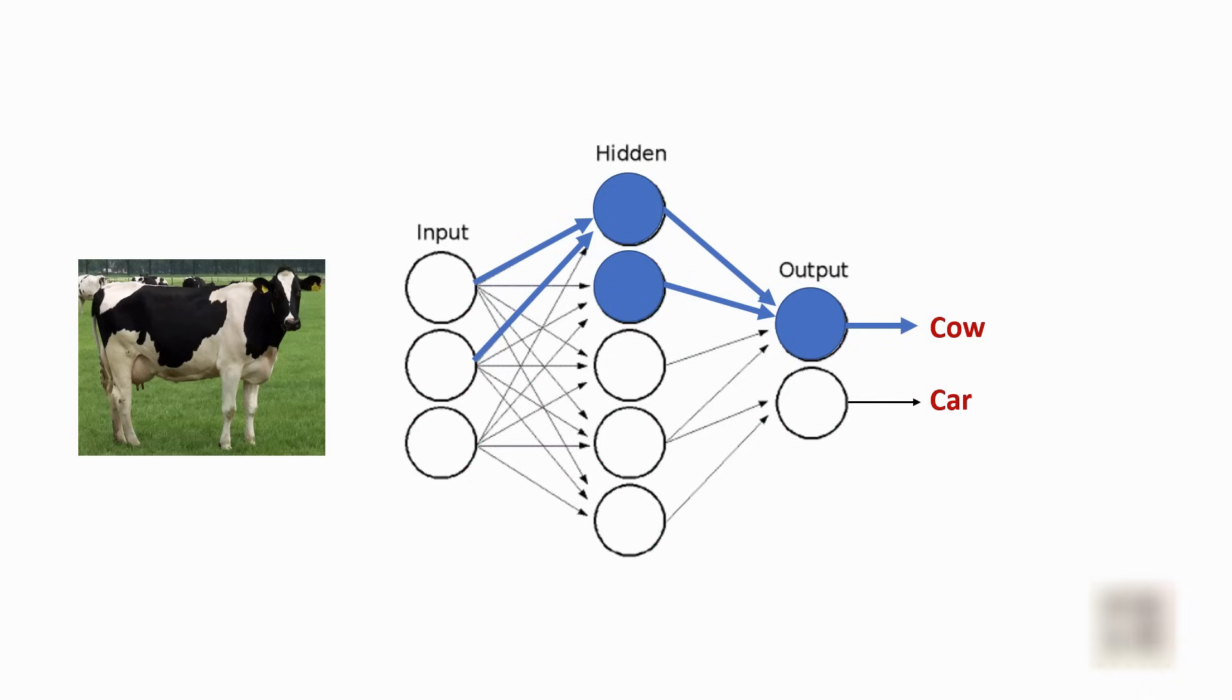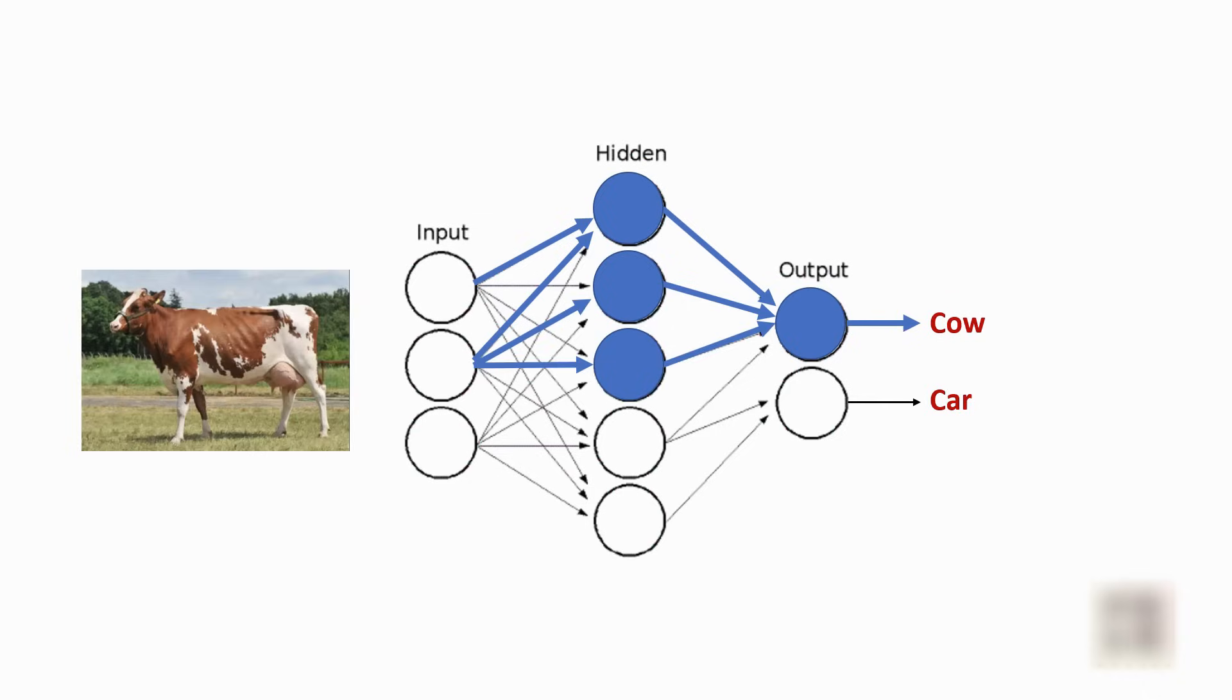The next day when the baby sees a second cow, you will tell the baby that okay, this is also a cow. So again, the same set of neurons and some additional neurons light up and these pathways become more stronger.